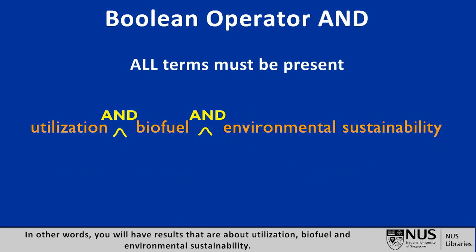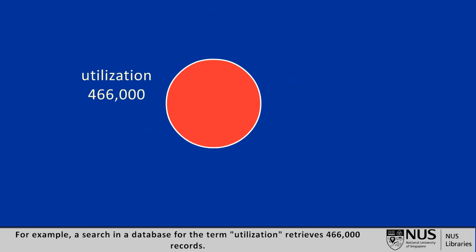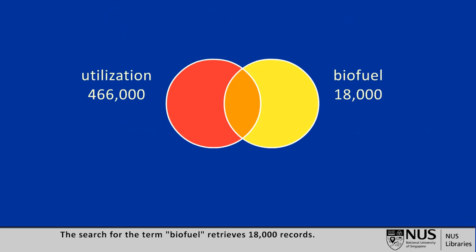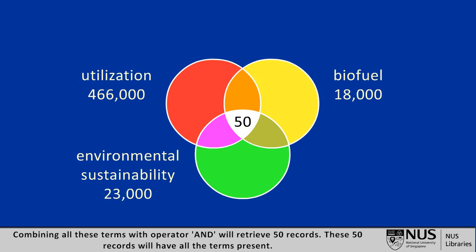In other words, you will have results that are about utilization, biofuel, and environmental sustainability. Let's look at these terms and see how Boolean operator AND works in this diagram. A search in the database for the term 'utilization' retrieves 466,000 records. The search for 'biofuel' retrieves 18,000 records, and the search for 'environmental sustainability' retrieves 23,000 records. Combining all these terms with operator AND will retrieve 50 records. These 50 records will have all the terms present.